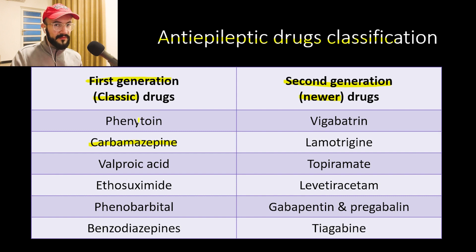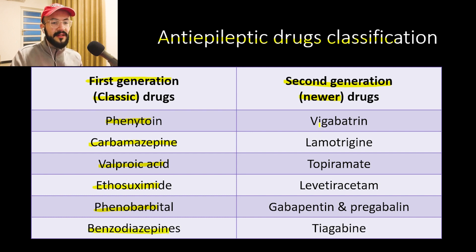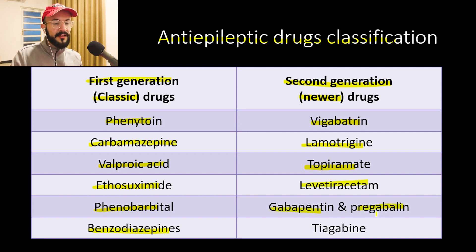Other examples of the first generation anti-epileptics include phenytoin, which we already explained, valproic acid, ethosuximide, phenobarbital, and the benzodiazepines. Examples of the second generation anti-epileptics include vigabatrin, lamotrigine, topiramate, levetiracetam, gabapentin and pregabalin, and tiagabine.